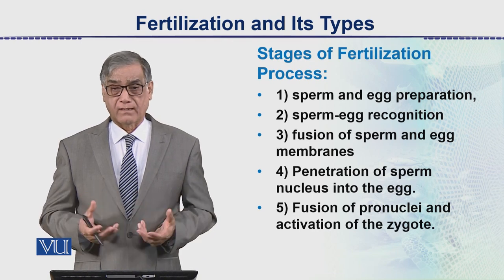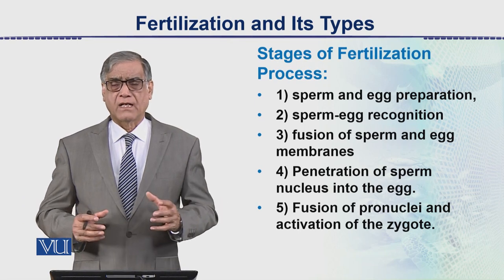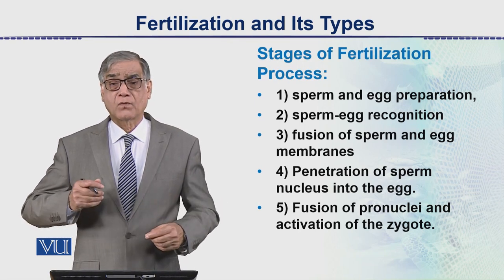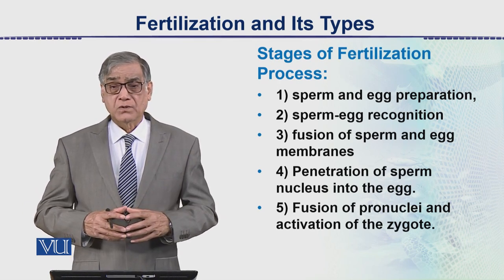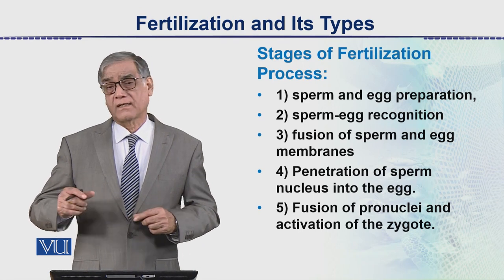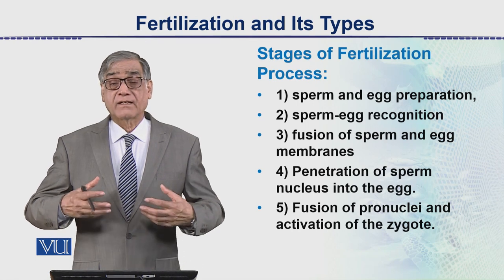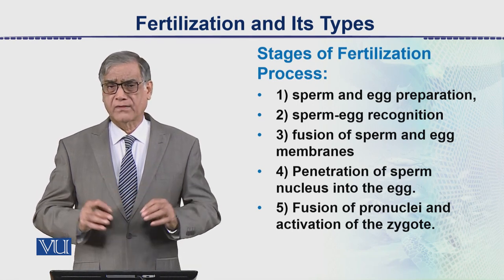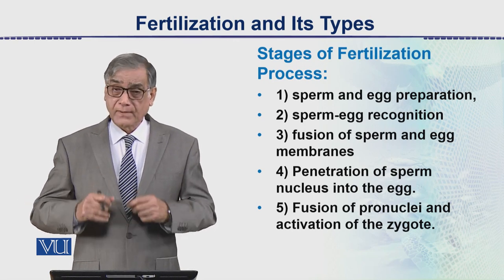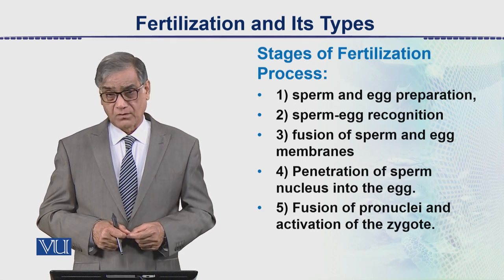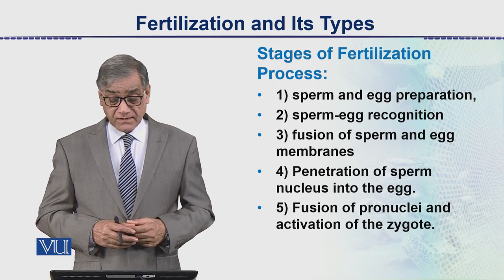In aquatic animals living in a water body where more than one species are living and spawning and fertilization is occurring, only similar species gametes will have attraction toward each other and proper recognition occurs. This is a very intricate process — the sperm recognizes the egg of its own species and then fuses, and zygote formation occurs.